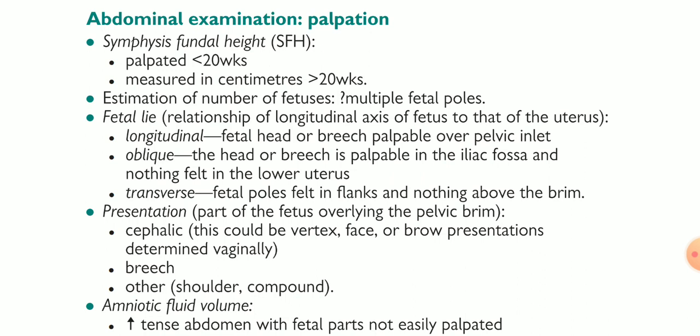Number two is the oblique lie: if the vertical axis of the baby or fetus is oblique to the vertical axis of the mother, the head is on one side and the fetal caudal part is on the other side. The head or breech is palpable in the iliac fossa and nothing is felt in the lower uterus, because the fetus is in an oblique position — the head or caudal part is displaced slightly right or left, leading to palpation in either the left or right iliac fossa. We cannot feel anything in the lower region of the uterus on Leopold's maneuver.